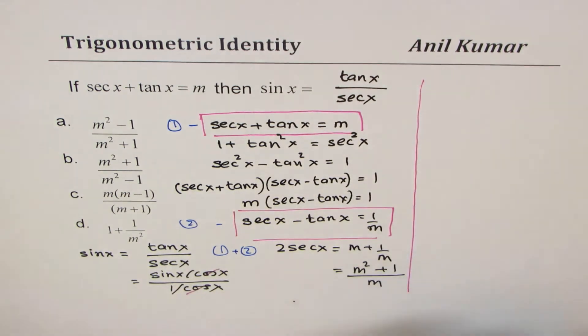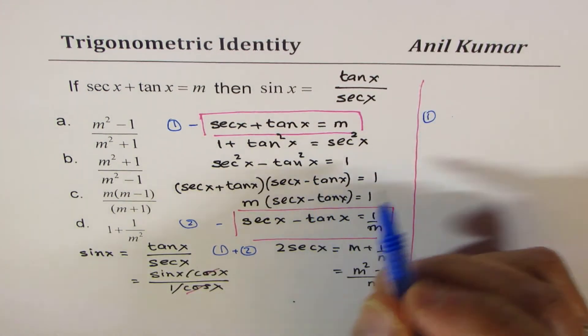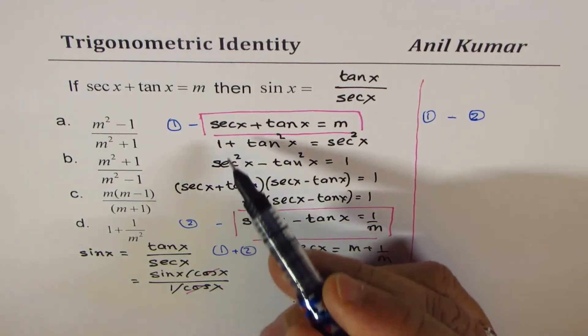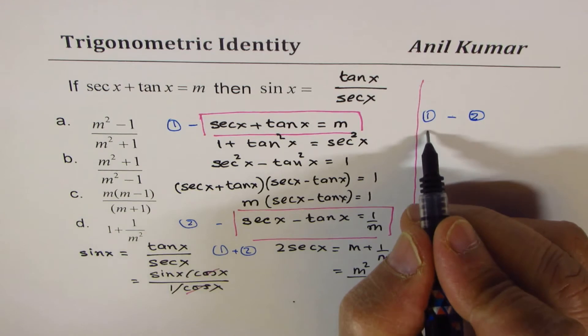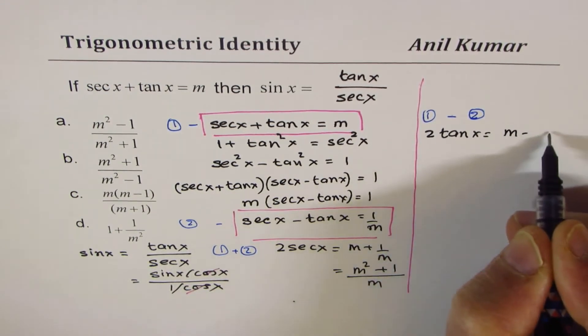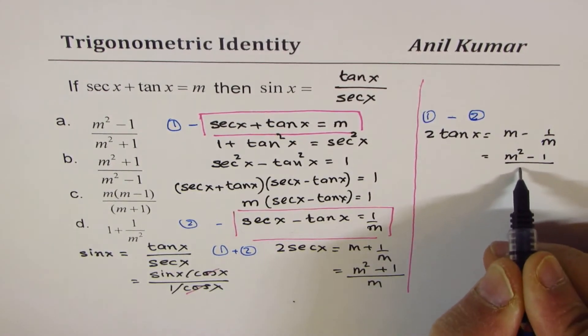Now if I subtract, then what do I get? So if I do equation 1 take away equation 2, in that case, secant, secant cancel out, I get 2 tan x equals to m minus 1 over m or m square minus 1 over m.